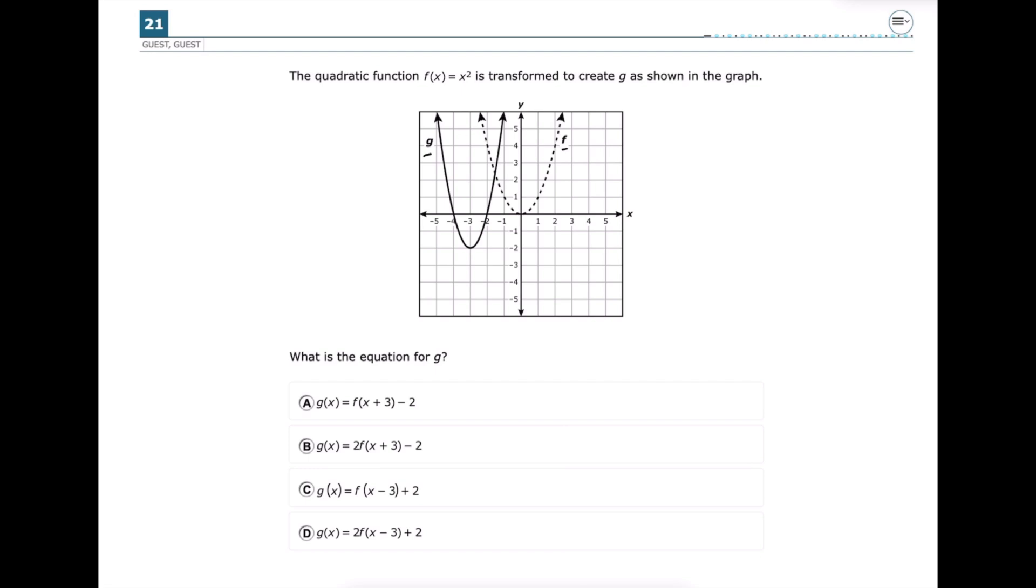If we look at the vertex of the graph, we can see that it actually ends up going down. Now it does go left as well, but for now let's just look at up and down. It goes down 1, 2, right, because now the y value of the vertex is negative 2 instead of 0.